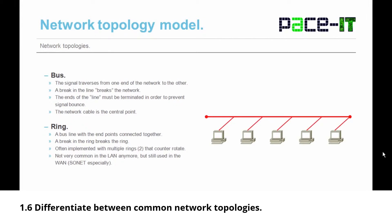In a bus topology, the signal traverses from one end of the network to the other. A break in the line breaks the network. The ends of the bus line needed to be terminated to prevent signal bounce — if the ends were not terminated, the signal would bounce back and create a storm. In a bus topology, the network cable is the central point.